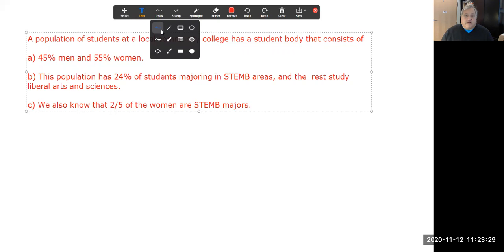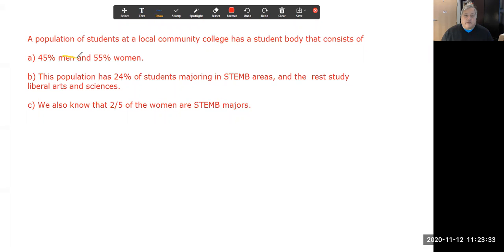Notice how the first situation talks just about men versus women, and the second talks about people majoring in STEMB or majoring in liberal arts and sciences. But this third one combines the first characterization with the second characterization. So we could think of men and women as describing one dimension of these students and the majors that these people study as a different dimension. We can assign a column dimension to one and a row dimensionality to the other, and that gives me the idea of perhaps I can build a table.